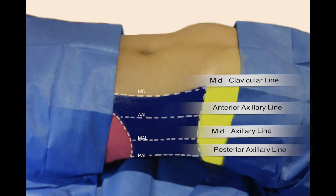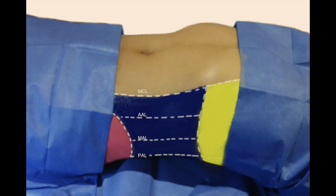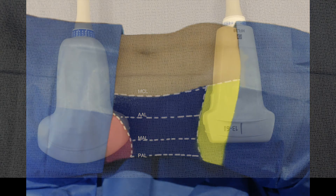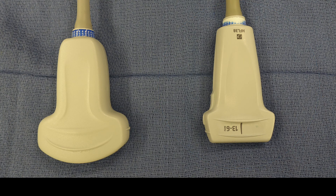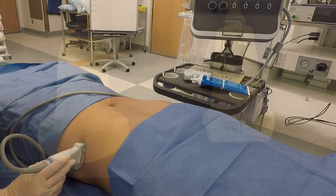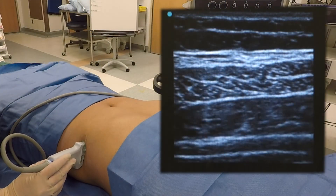Next, position your ultrasound on the opposite side of the site of the block. Then, perform a timeout confirming a valid consent, allergies, correct patient, and correct side. Next, use aseptic skin preparation, don sterile gloves, prepare your sterile field, place a sterile ultrasound cover and gel, and prime the needle and tubing with a syringe of local anesthetic.